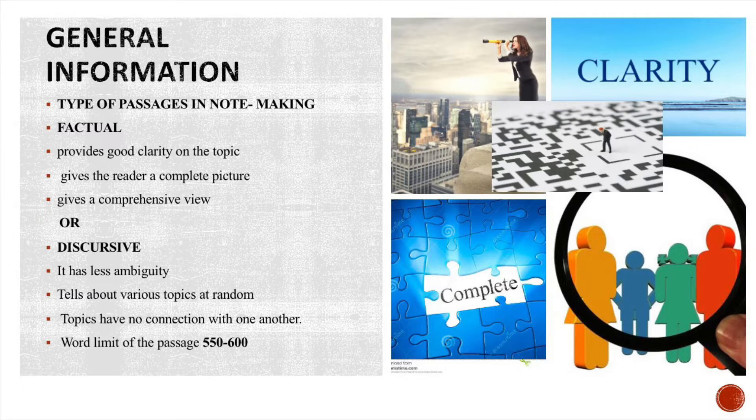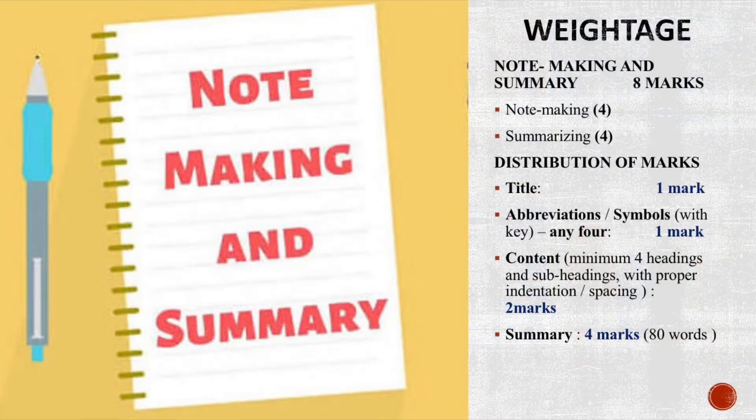A discursive passage has less ambiguity, which means the passage will talk about various topics at random that appear to have no connection with one another. Moreover, these passages are generally 550 to 600 words in length.